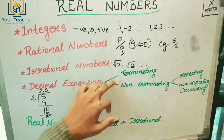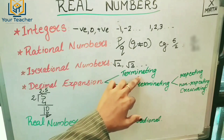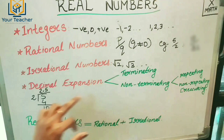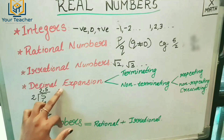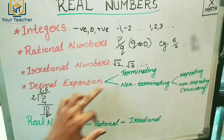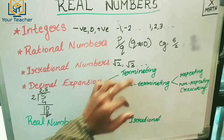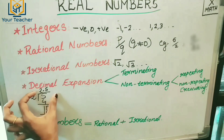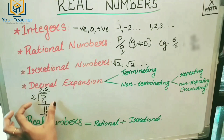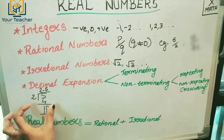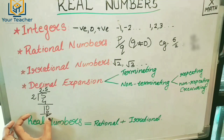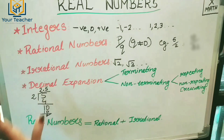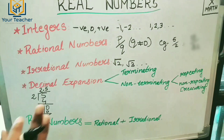Decimal expansion is of two types: Terminating Decimal Expansion and Non-Terminating Decimal Expansion. Terminating Decimal Expansion means when we do the division and the remainder becomes zero. For example, 5 by 2 gives 2.5 — done.